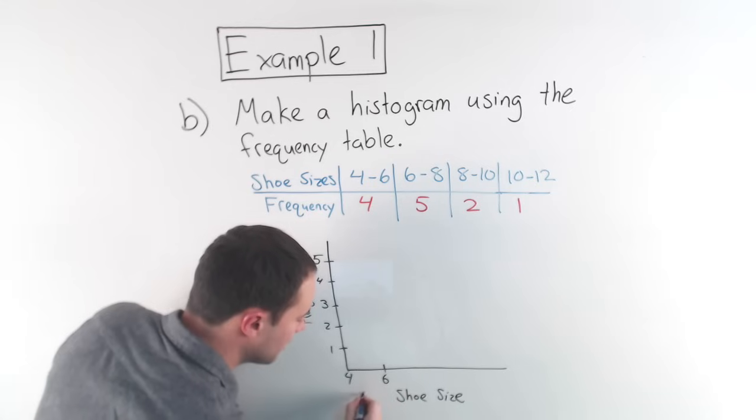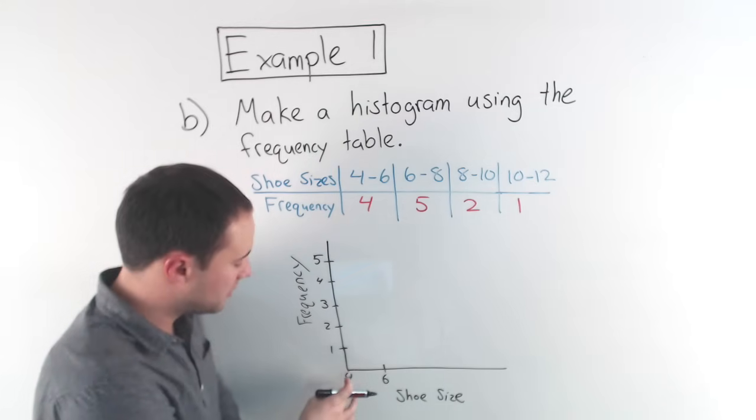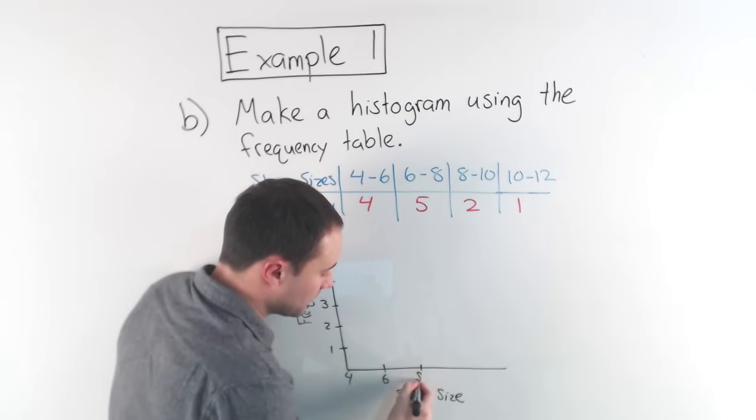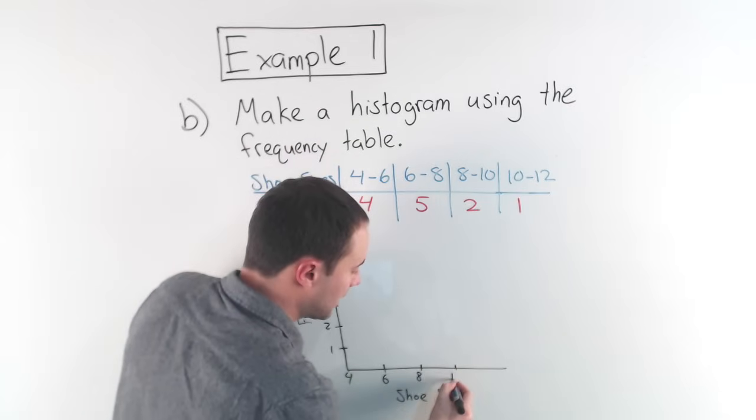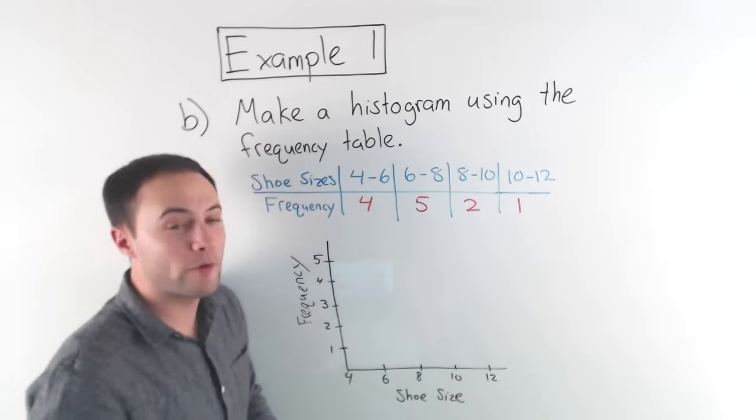Okay. I don't need to do four to six. Okay. There are no gaps. So I'm just going to go four, six here would be eight. So from here to here represents six to eight, 10 and finally 12. So I've got all that ready.